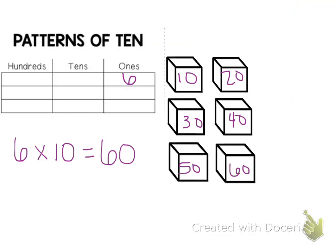So I'm going to put 60 in the next row of my place value chart, and I can show 60 with place value blocks as well. I'm going to draw 6 long rods for my tens for the place value blocks.